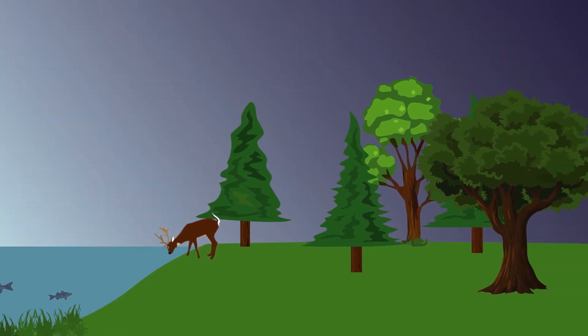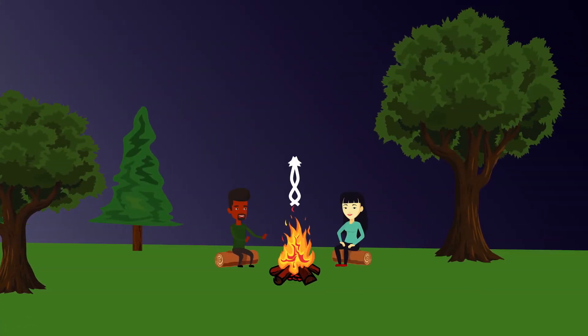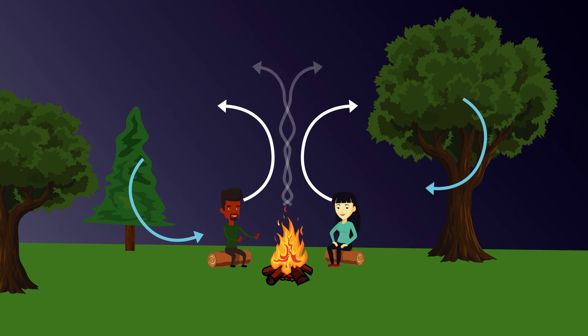The carbon cycle is nature's way of reusing carbon atoms, which travel from the atmosphere into organisms in the Earth, and then back into the atmosphere, over and over again.